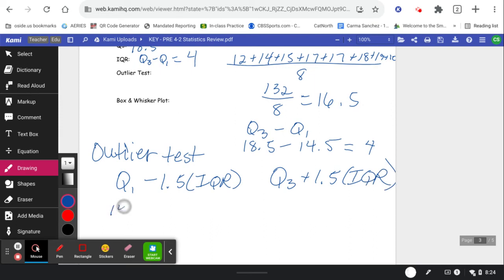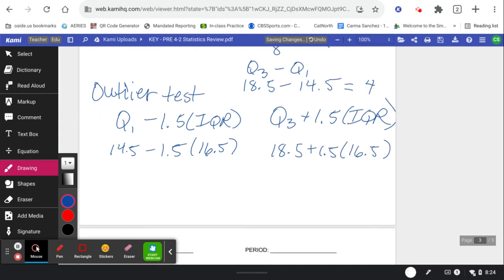So my Q1 we got as 14.5, and my IQR was 16.5. My Q3 was 18.5, and my IQR was 16.5. So grabbing my calculator, one and a half times, so 1.5 times 16.5, this is going to be 24.75. In both cases, it's always the same there at the back.